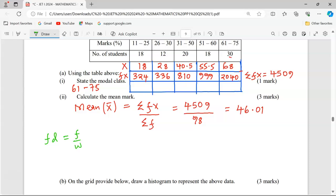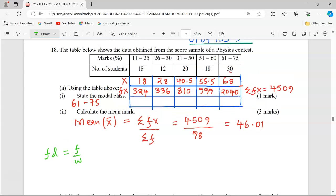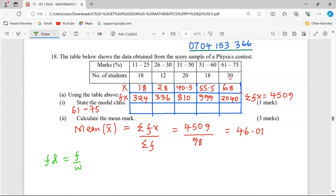To get the width of the classes, we take the upper boundary minus the lower boundary. For example, in the first class, we need 25.5 minus 10.5, the upper and lower boundaries respectively. That gives us exactly 15. So we need 18 over 15, which is 1.2.